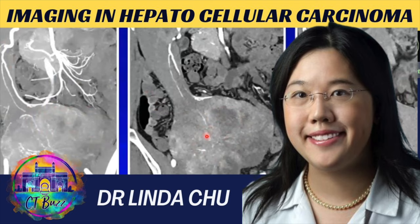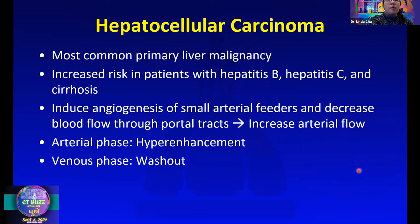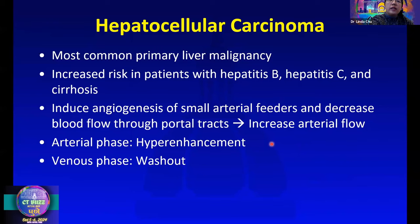We'll talk about hepatocellular carcinoma. It is the most common primary liver malignancy, and it has increased risk in patients with hepatitis B, hepatitis C, and cirrhosis. HCC induces angiogenesis of small arterial feeders and decreases the blood flow through the portal tracts, leading to a net increase in arterial flow. That's why we expect to see hyper-enhancement on arterial phase and washout on venous phase.